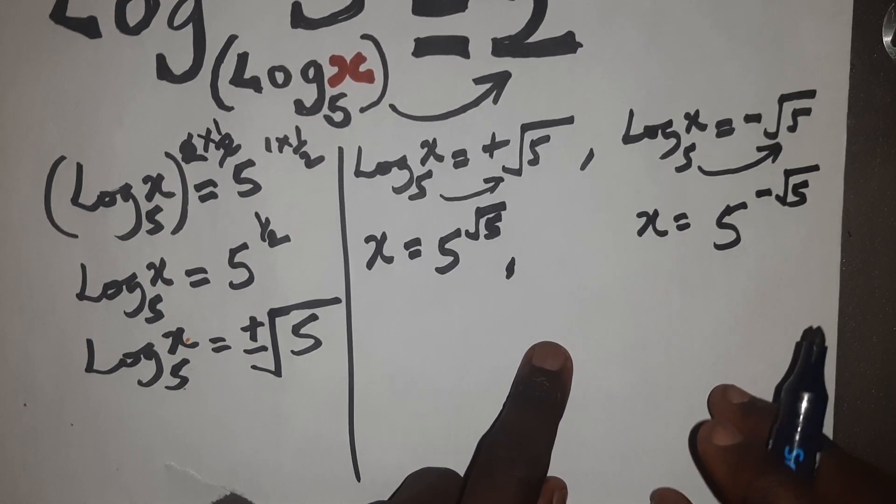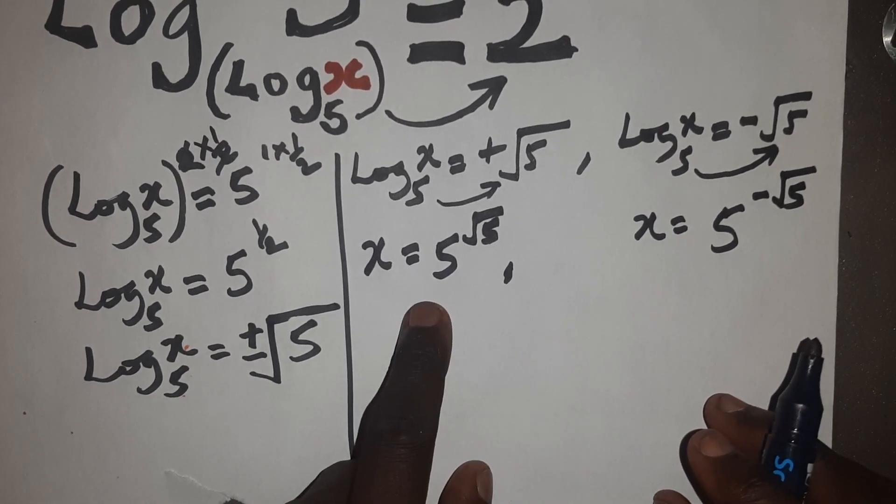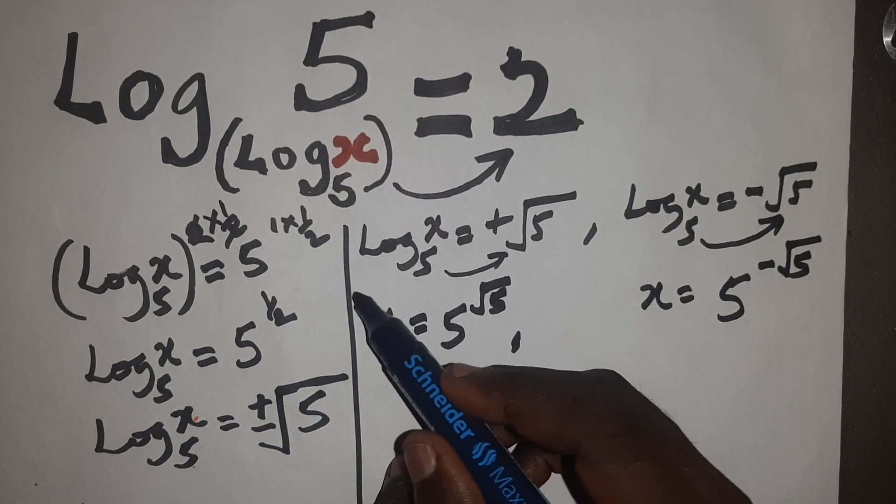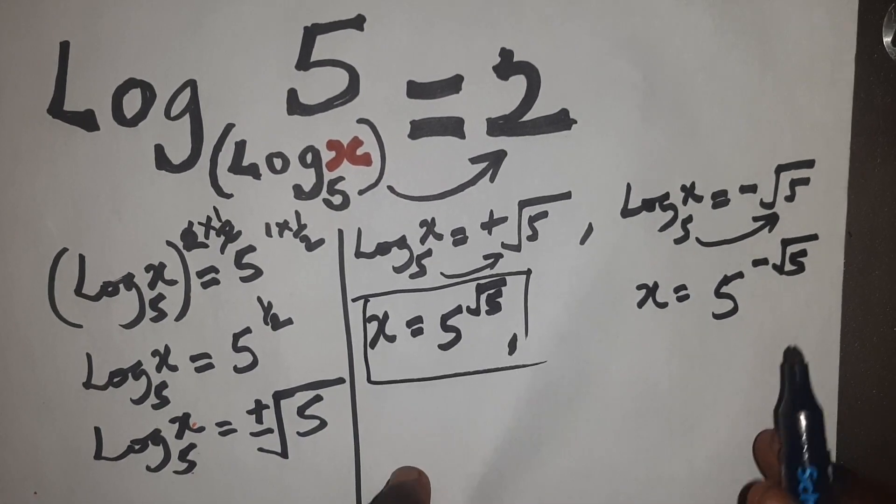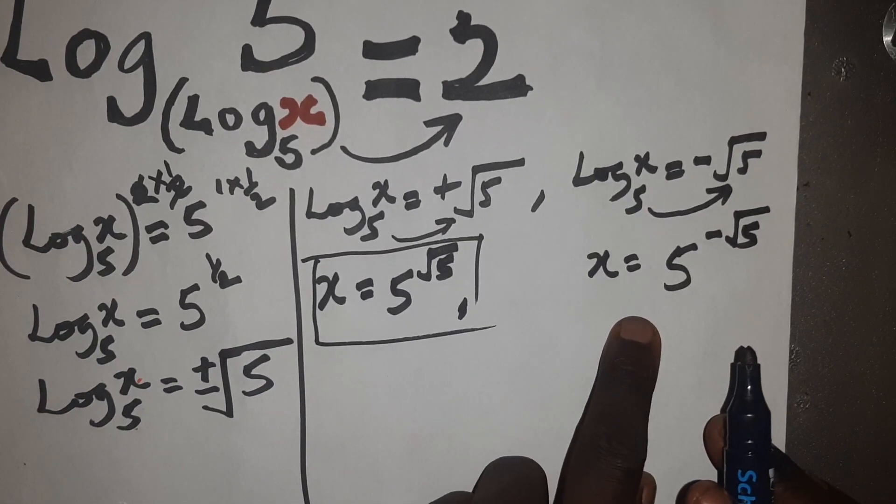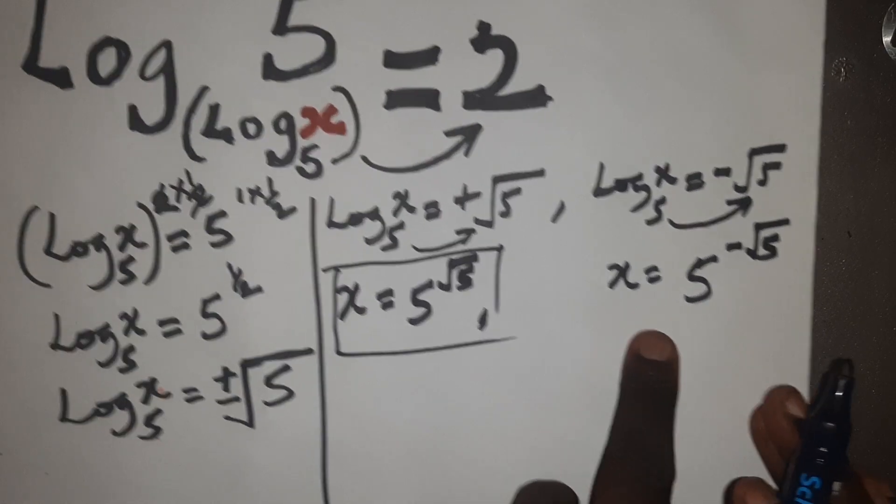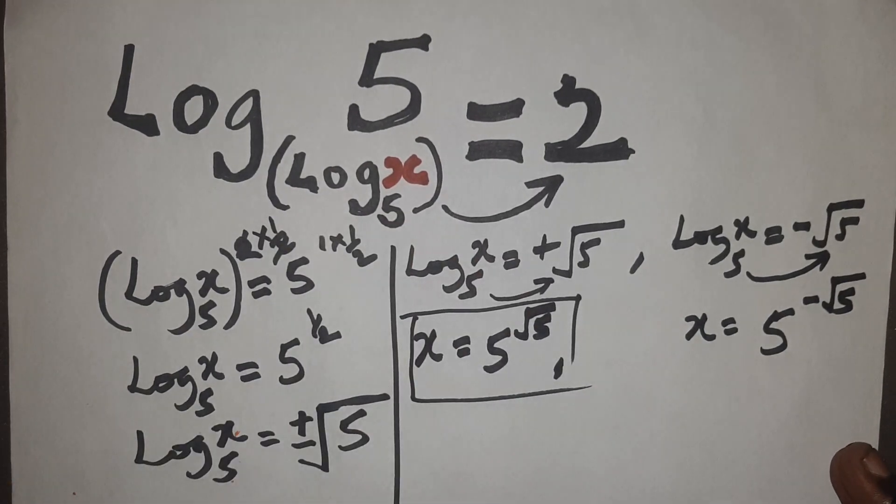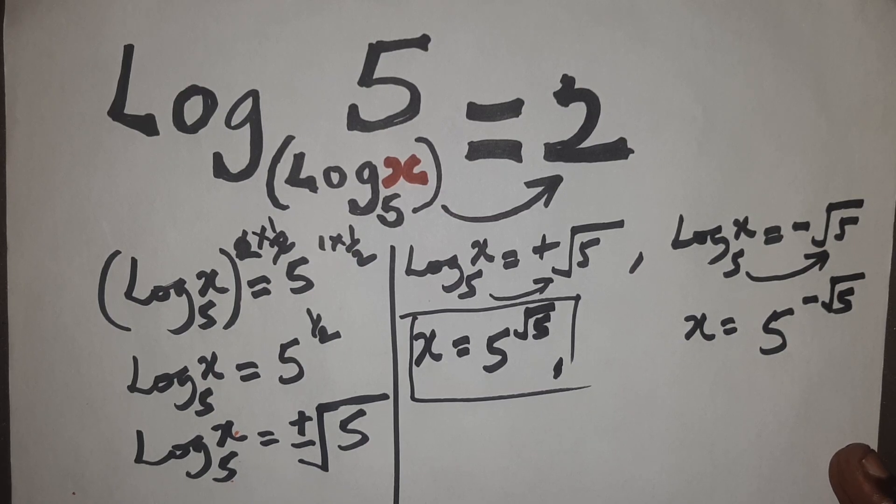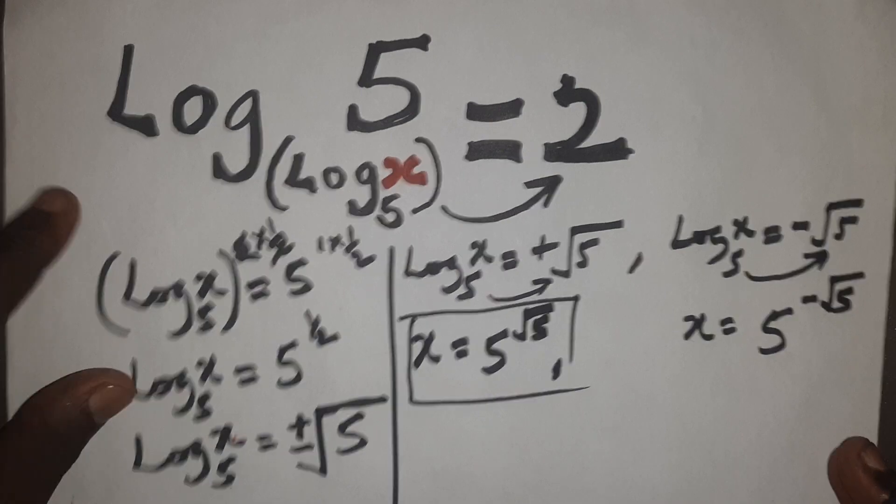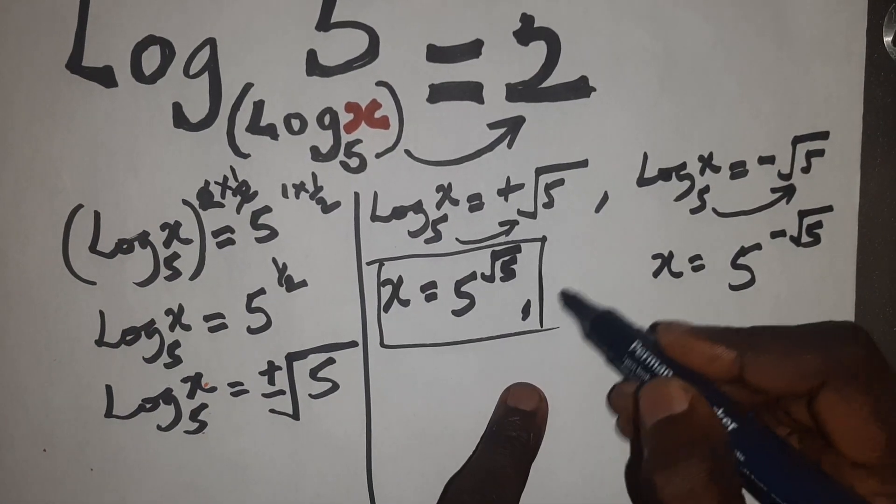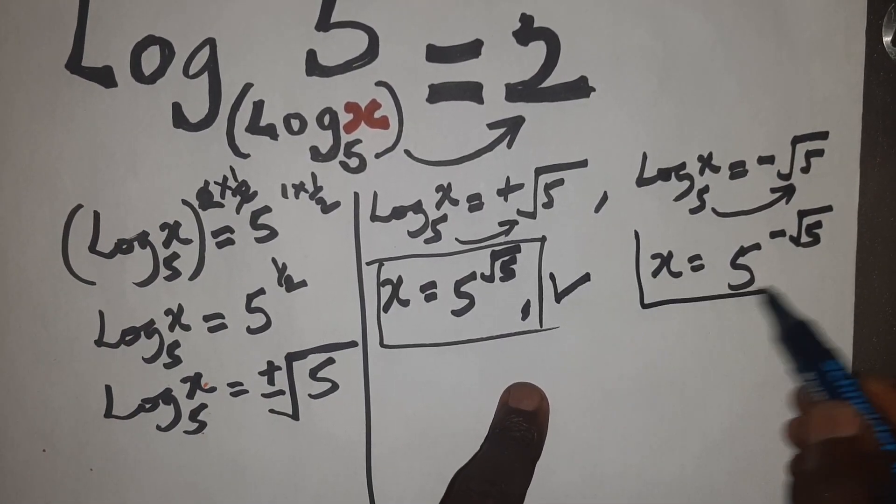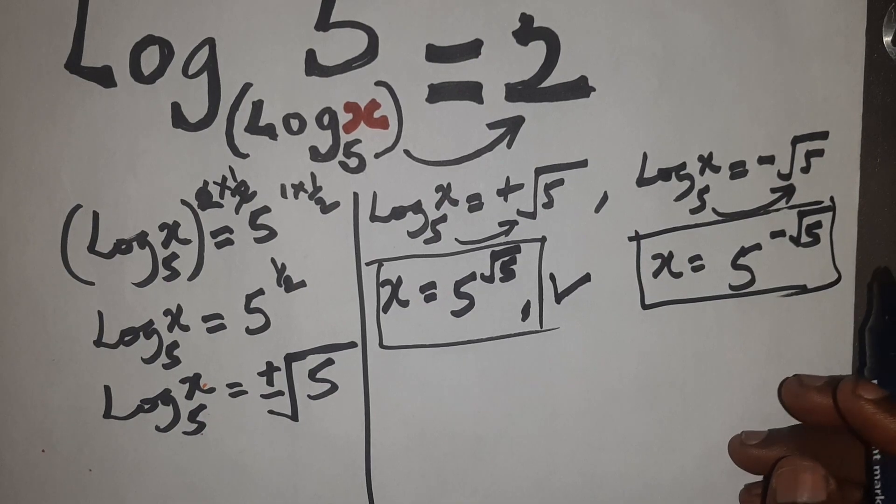But in this case, only this value satisfies the equation here. So this is our answer. This is an extraneous root that will give you a complex value. When you fix it in the base, remember that a logarithmic base shouldn't have a negative value unless you are dealing with complex, except you want to go in the complex plane. So for this case, this is our valid answer, and this is an extraneous root. So that's it.